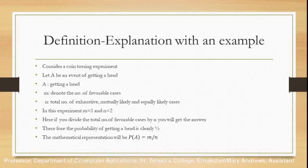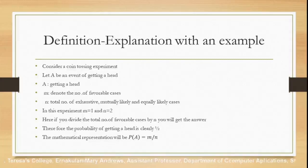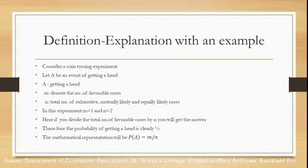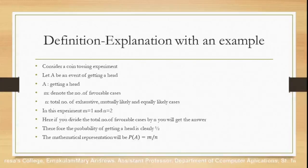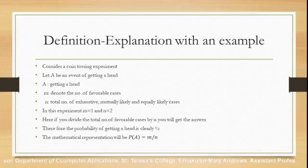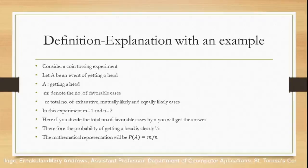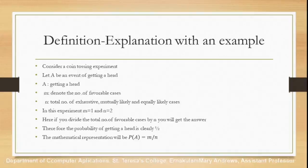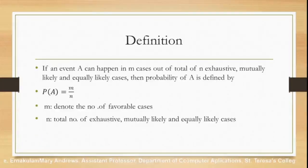If you flip a coin you will get either a head or a tail, so the total number of cases n is 2. Since A is the event of getting a head, m is 1 and n is 2. Dividing the number of favorable cases by n gives 1/2. Therefore the probability of getting a head is 1/2. Mathematically, P(A) = m/n, and in this case P(A) = 1/2.